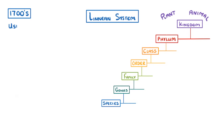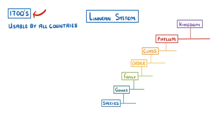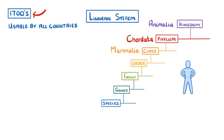To make this system usable by all different countries, and because it was designed hundreds of years ago, the names are mostly in Latin. For example, humans are Animalia, Chordata, Mammalia, Primates, Hominidae, Homo, and Sapiens.